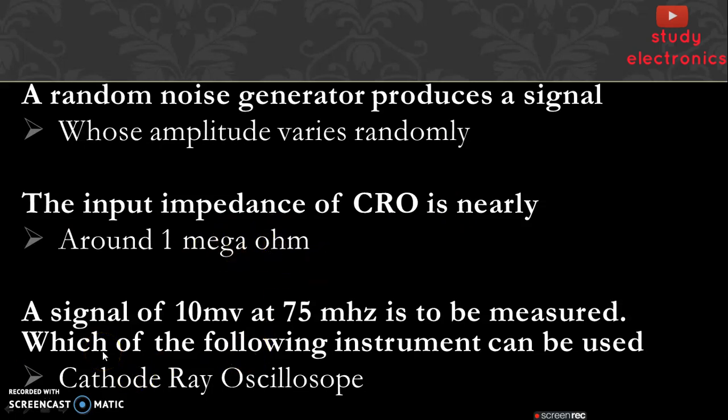Next, a signal of 10 milliwatt at 75 megahertz is to be measured. Which of the following instrument can be used? A signal at 75 megahertz is measured by a cathode ray oscilloscope.